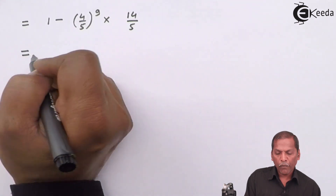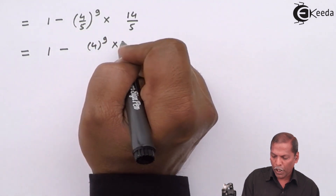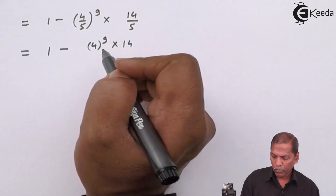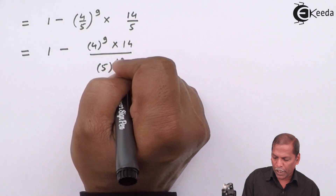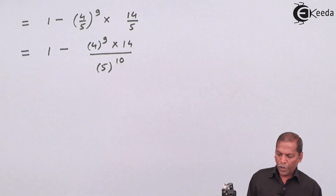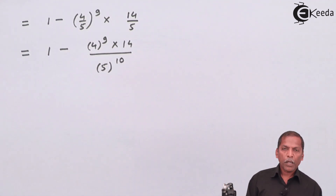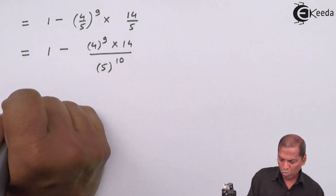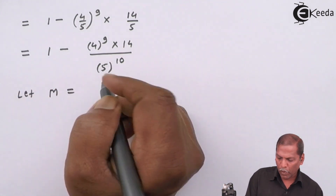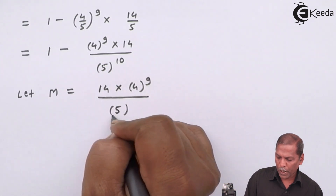So that equals 1 − (4/5)^9 × (4/5 + 10/5), and 4/5 + 10/5 gives 14/5. On further simplifying we get 1 − (4^9 × 14) / (5^9 × 5^1), giving denominator 5^10. So the second part is (14 × 4^9) / 5^10. We denote this as m, so let m = (14 × 4^9) / 5^10, and we solve this using log tables.